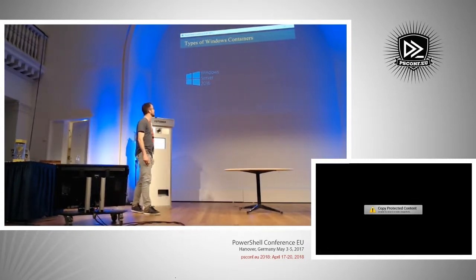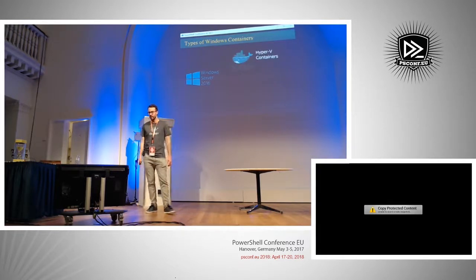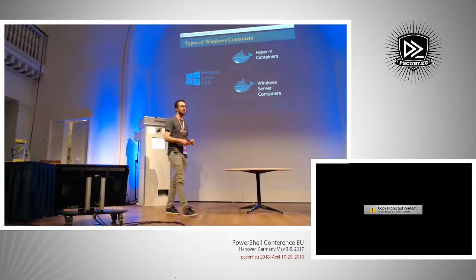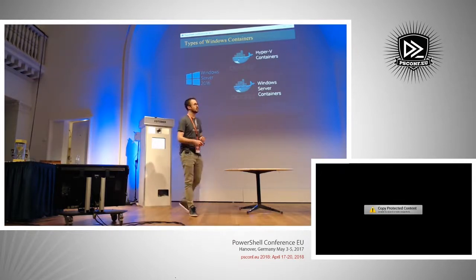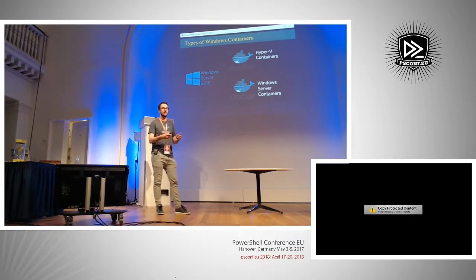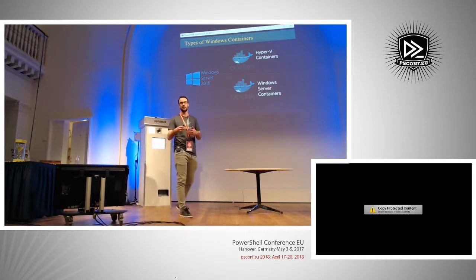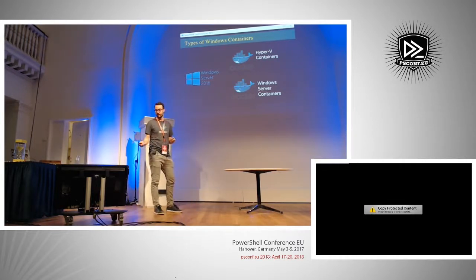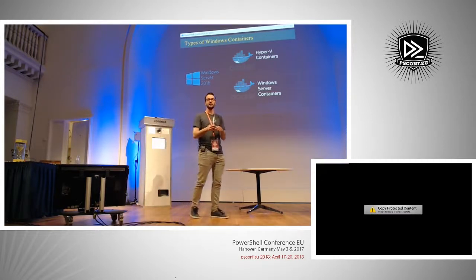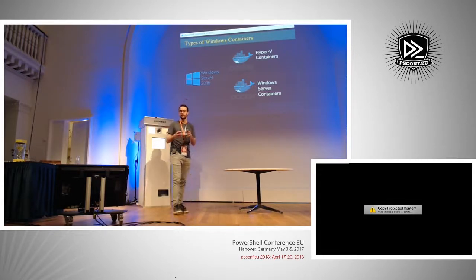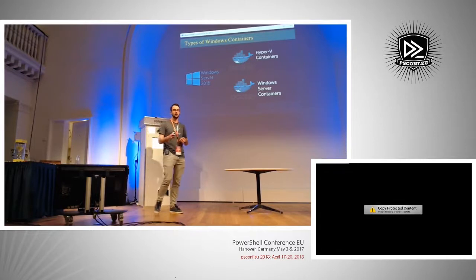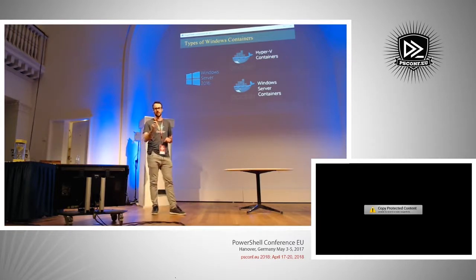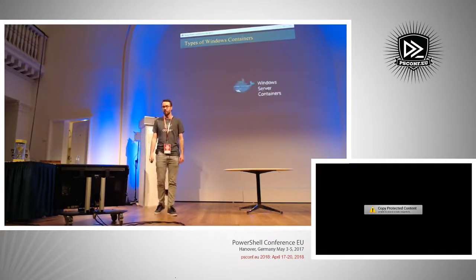There are two types of Windows Server containers we're going to focus on today: Hyper-V containers and Windows Server containers. The difference is essentially at the isolation level. Hyper-V containers don't share the host's kernel — there's an associated Hyper-V machine that encapsulates running that container, so it's more secure with its own resources provisioned. Windows Server containers, like standard Linux-type containers, share the host operating system's kernel. We're going to be focusing on Windows Server containers today.